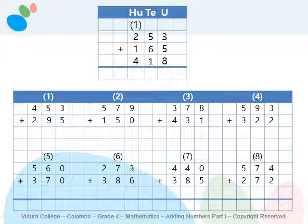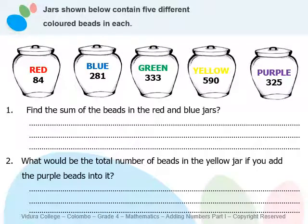Let's go to a different question. Imagine you are going with your mother to a shop to buy some beads to make a necklace for your concert. These jars contain five different colored beads each — red, blue, green, yellow, and purple. The red jar has eighty-four beads, the yellow jar has five hundred and ninety, the blue jar has two hundred and eighty-one, the purple jar has three hundred and twenty-five, and the green jar has three hundred and thirty-three.